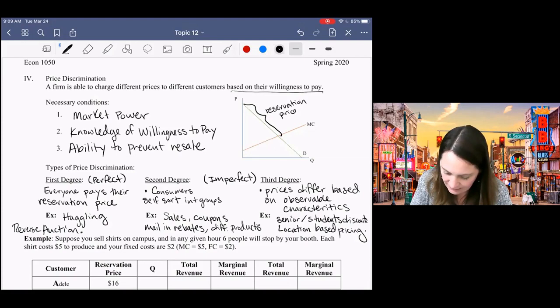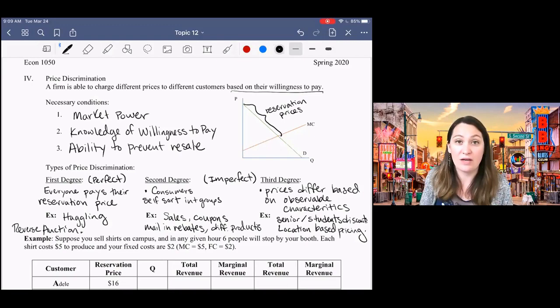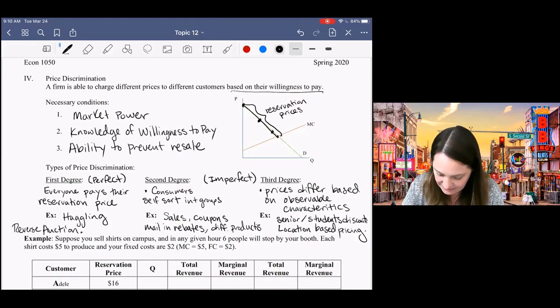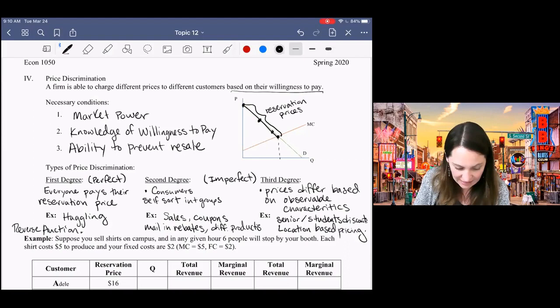Just like before, any firm wants to produce as long as marginal revenue is greater than marginal cost. In this situation, I can now lower the price for each individual customer without changing the price for the previous customers, because I can charge different prices to everybody. So these high willingness to pay customers will pay a high price. The lower willingness to pay customers will pay lower prices. Everybody pays a different price. So I want to produce as long as that price is greater than my marginal cost curve.